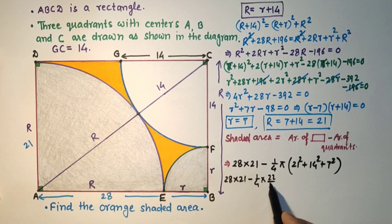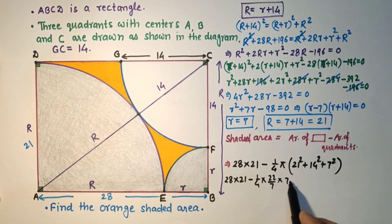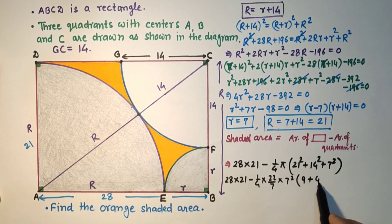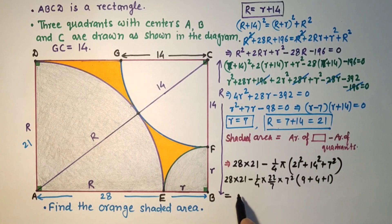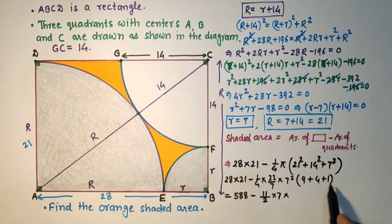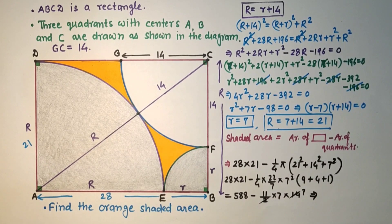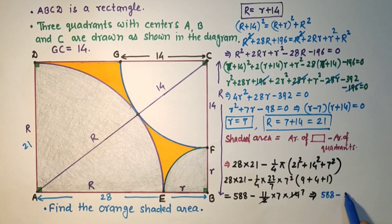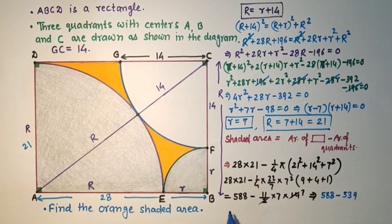Taking π as 22/7, we get 28 × 21 minus (1/4)(22/7) taking 7² common from inside the bracket: 7² × (3² + 2² + 1) = 7² × 14. Multiplying 28 and 21 gives 588. The 7s cancel, giving (11/2) × 7 × 7 × ... = 539. Subtracting 539 from 588 we get 49 square units, which is the required shaded area.